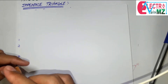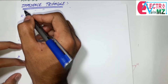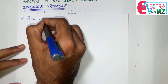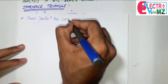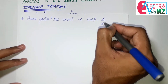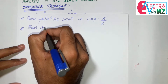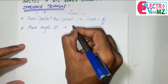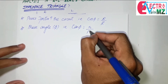Number two, the impedance triangle is used to find out the power factor of the circuit, where cos phi equals R divided by Z, and also the phase angle phi, where tan phi equals XL over R.